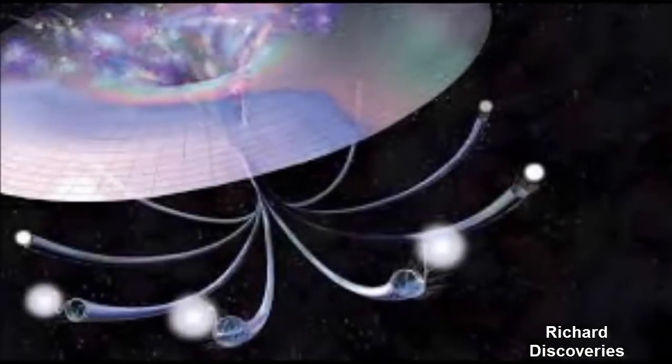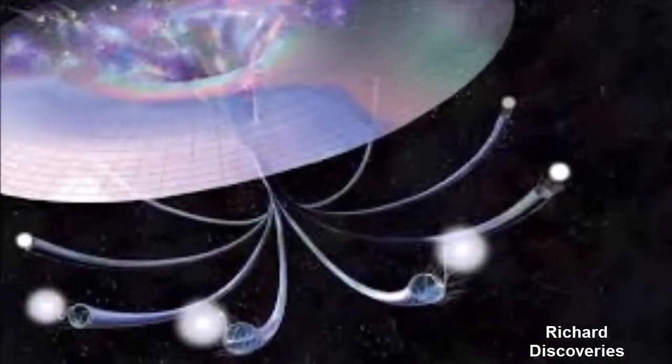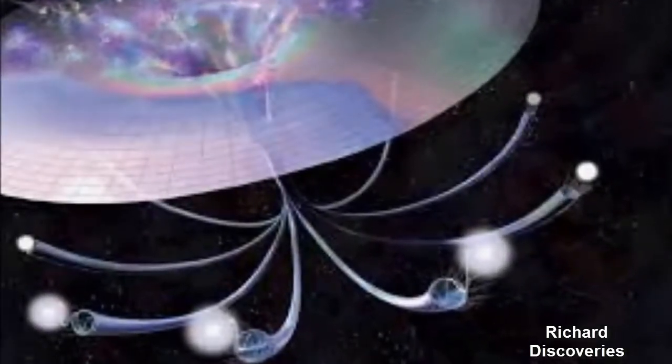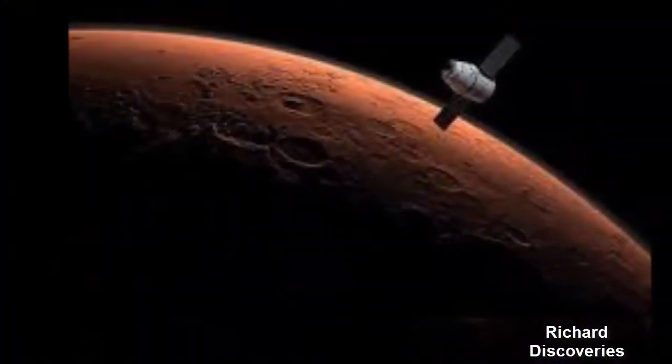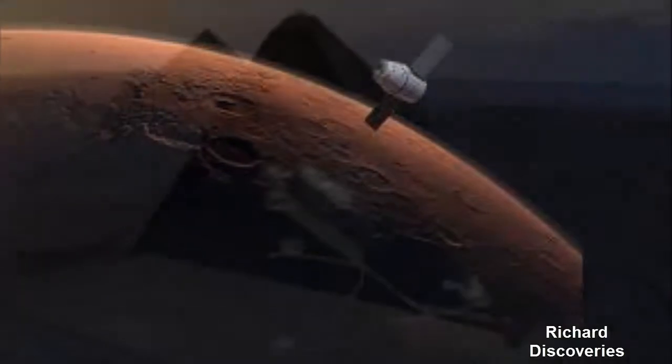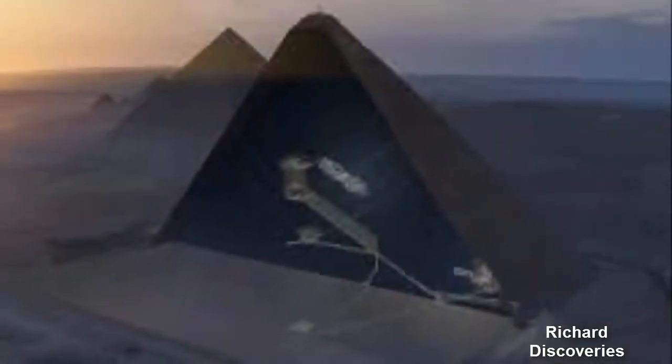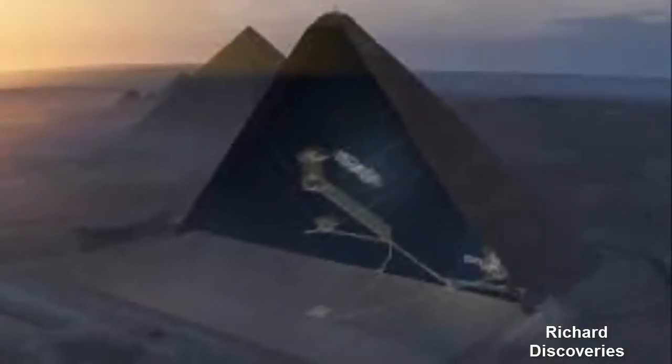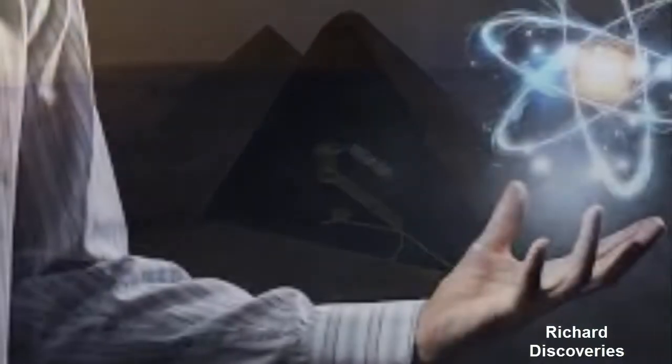How Scientists See Through Walls Using Particles From Space. A void was just discovered in Khufu's pyramid using muon tomography. What are these cosmic particles and how do scientists use them to see through walls? Even though it's 4,500 years